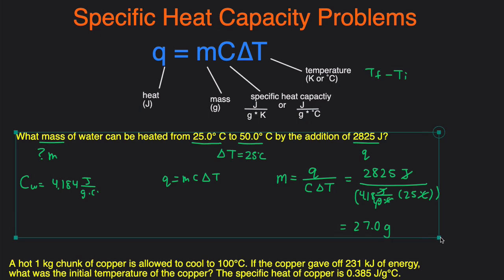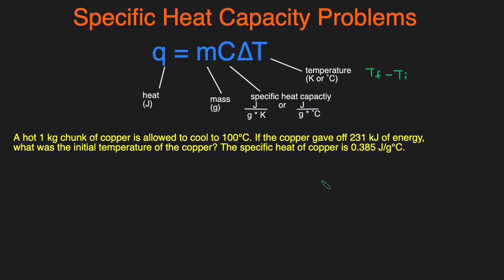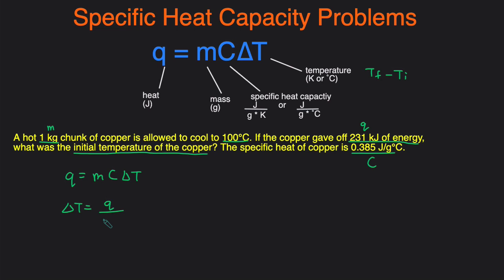Let's take a look at one last question — this one is a little more tedious. We have a one kilogram chunk of copper — the mass is in kilograms but it has to be in grams. One hot kilogram chunk of copper is allowed to cool to 100 degrees Celsius. The copper gave off 231 kilojoules of energy, so that's our Q value. We're asked for the initial temperature of the copper, and the specific heat capacity is given. We isolate delta T first: from Q equals MC delta T, dividing both sides by M and C gives delta T equals Q divided by MC.